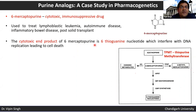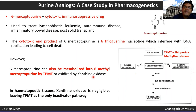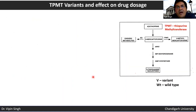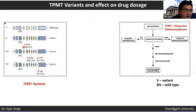The cytotoxic end product of 6-mercaptopurine is 6-thioguanine nucleotide, which interferes with DNA replication leading to cell death. However, 6-mercaptopurine can be diverted to form 6-methylmercaptopurine, which is useless therapeutically. TPMT is polymorphic in the population — for example, a guanine replaced by cytosine at position 238 results in replacement of alanine by proline, producing a less effective TPMT molecule. We want most of the drug going to the functional pathway, not the TPMT-mediated pathway.